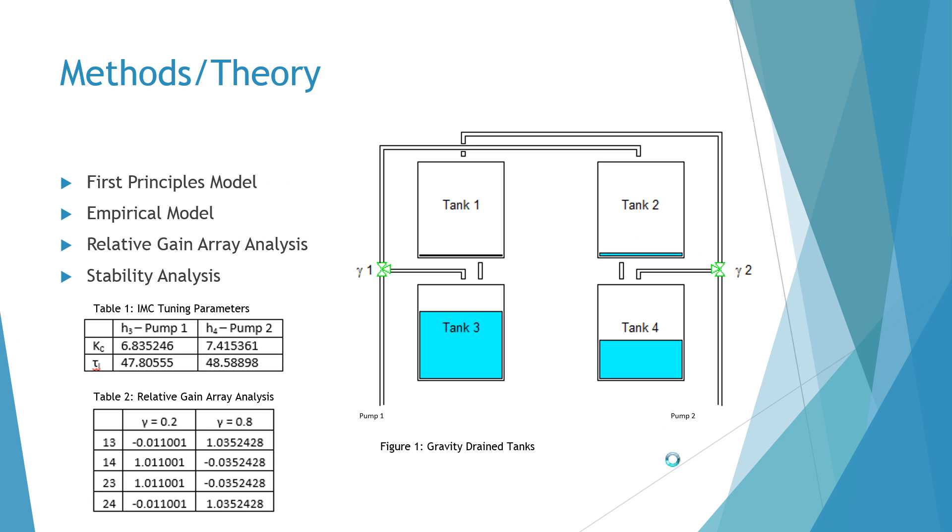Here's a diagram of our system on the right. It consists of four gravity-drained tanks coupled together. There are two pumps and after each pump there's a valve that controls the flow through each pipe.